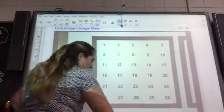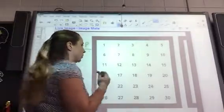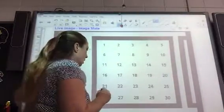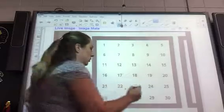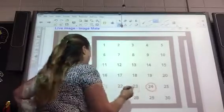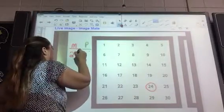Alright, so I'm going to start off and I'm going to circle any number I want to. And I want the most points, so I'm going to go with 24. So right away I get 24 points.